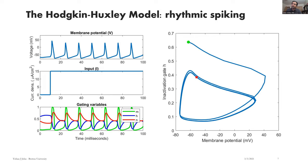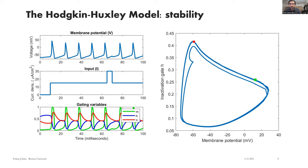Here we see classic tonic spiking — I've just turned on some input and held it constant. The gating variables all shift completely downwards to this new zone. The input kind of determines what the phase plane is — it's not the same phase plane for the system with input versus without, so it's shifting the whole system.